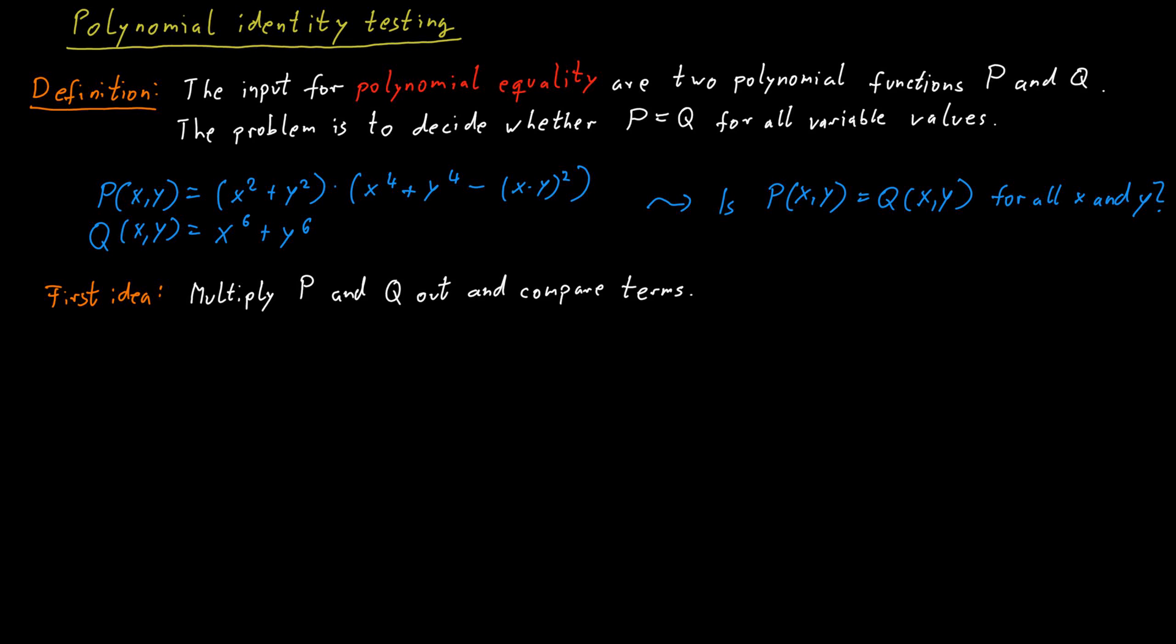And if we have a compact input representation, as I just said, we are allowed to use brackets and powers and so on, then multiplying this out might result in something that contains an exponential number of terms in the original input encoding size.